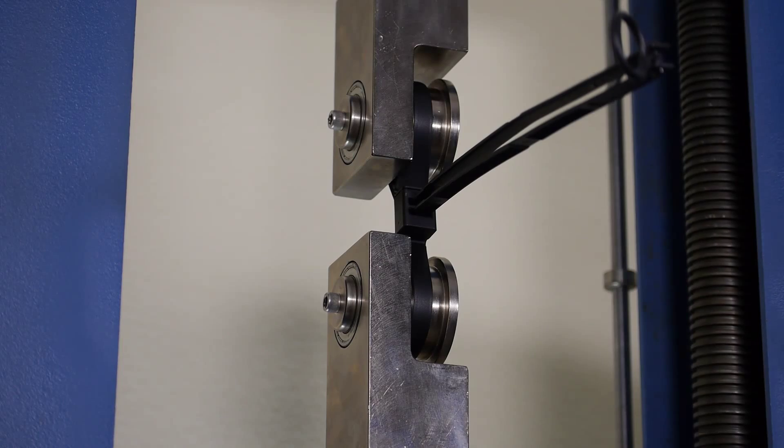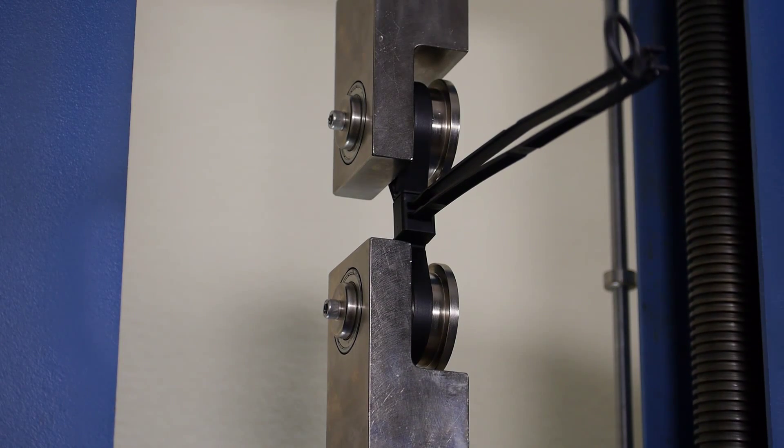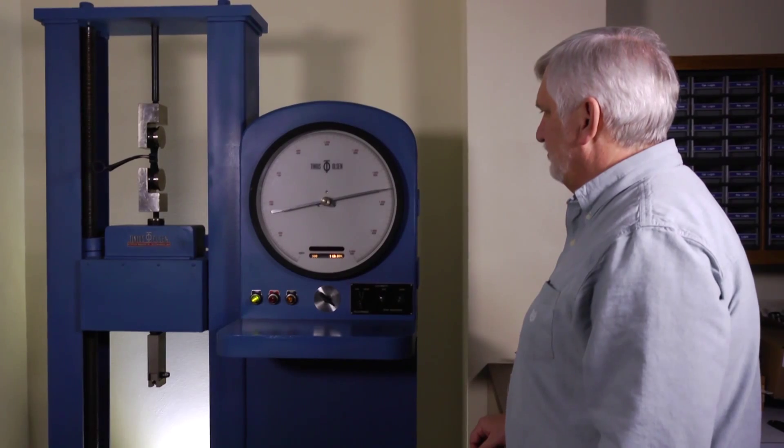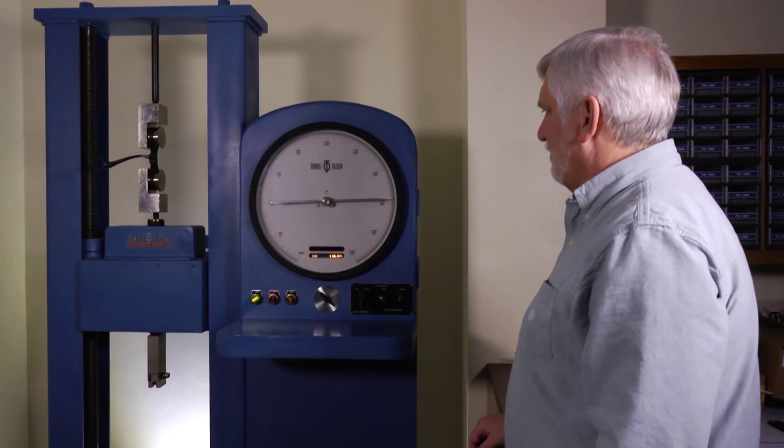Recently he put our new tri-fold restraints to the test with an Instron machine. The machine exerts direct pressure on the restraints and measures the point at which they break or slip, or when a subject could get free.